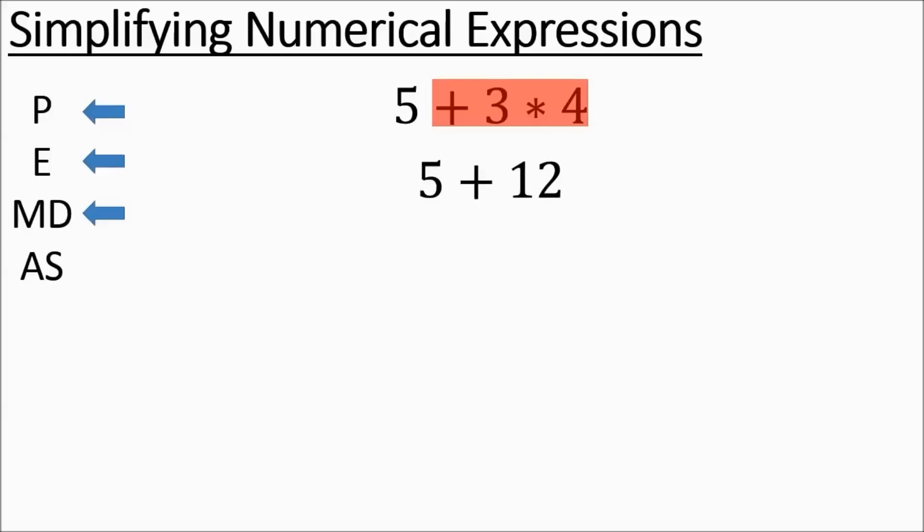So 5 plus 12 is your next line. And then you have your add subtract, so you're going to add those two numbers and you get 17. If you need to see that process again, stop, rewind, check it out.